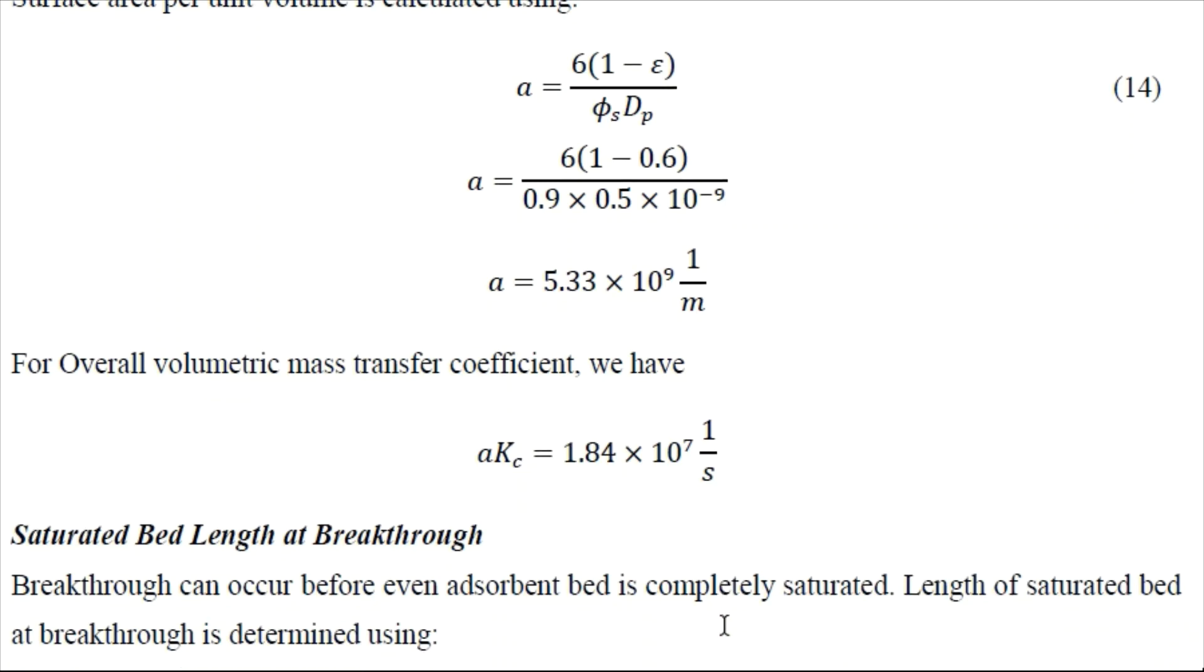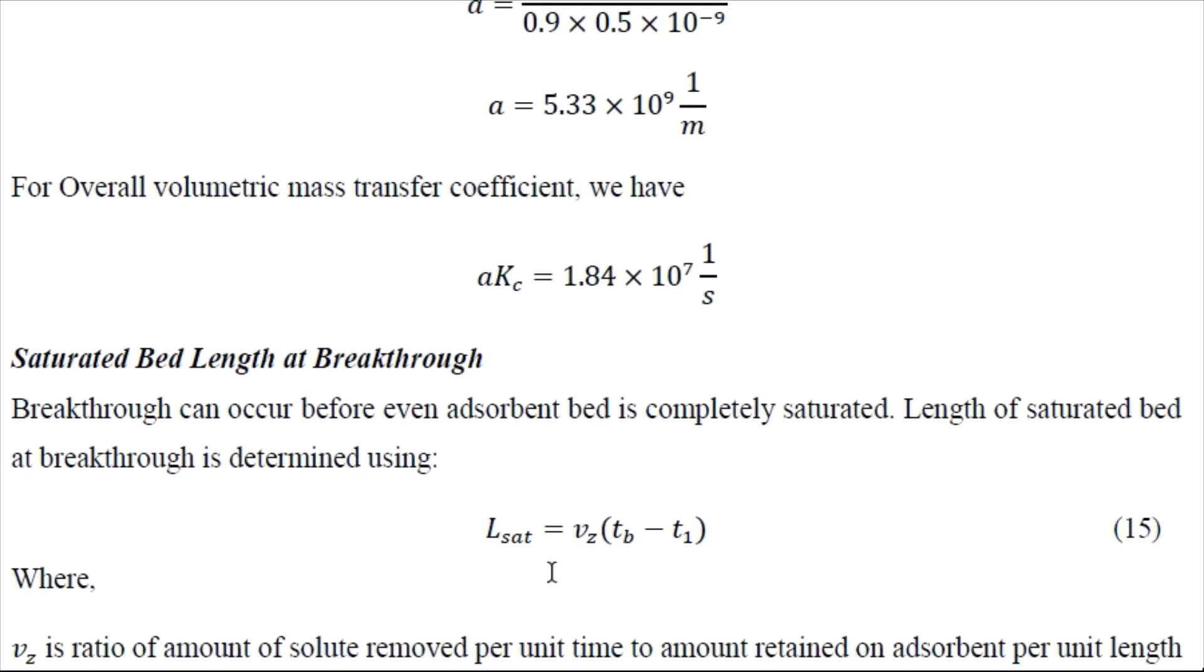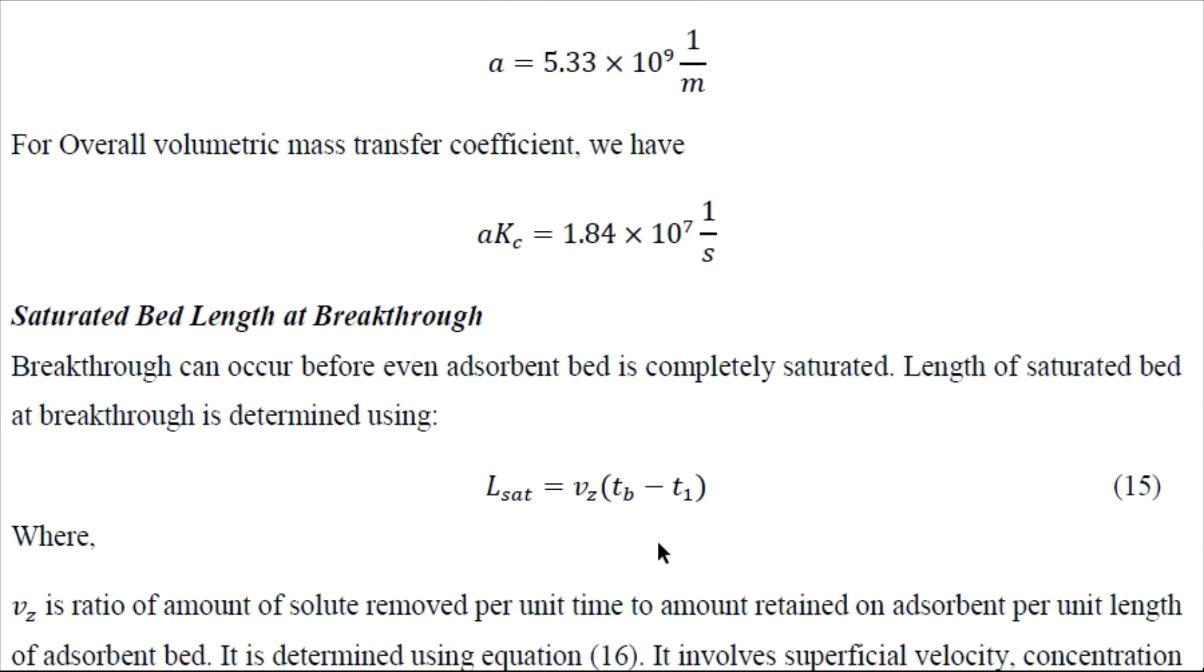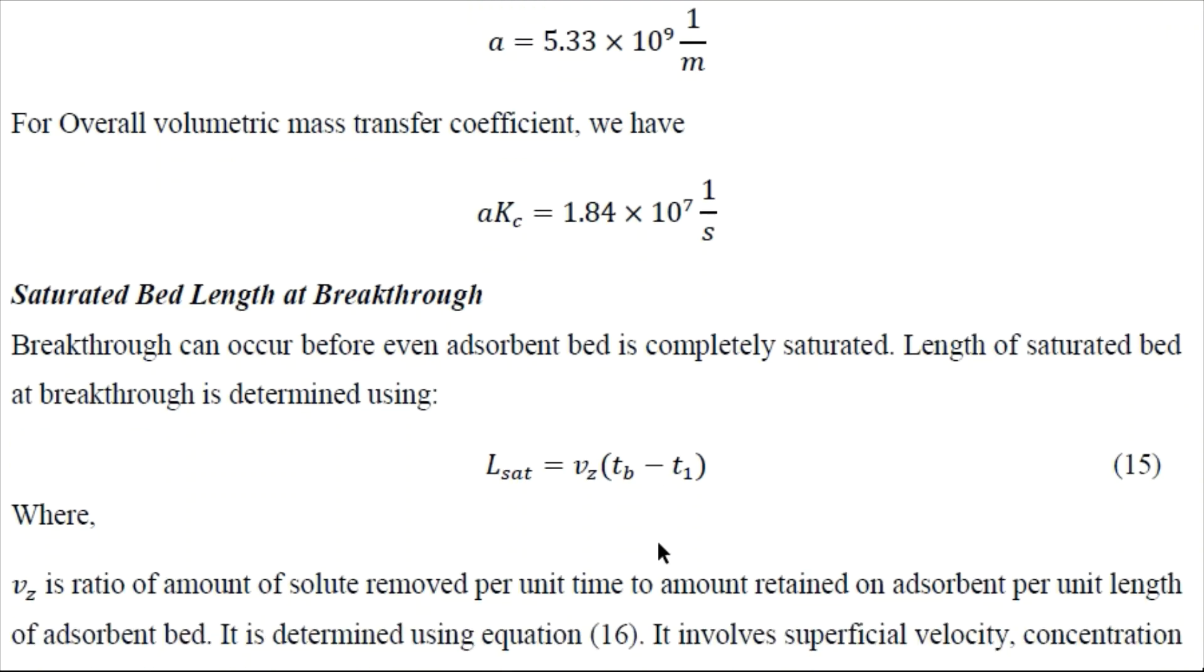Then we need to find the saturated bed length at breakthrough, which is given by equation number 15. That is Vc into Tb minus T1. Vc is basically ratio of mass of solute removed per unit time to the amount retained on the adsorbent per unit length of the adsorbent.